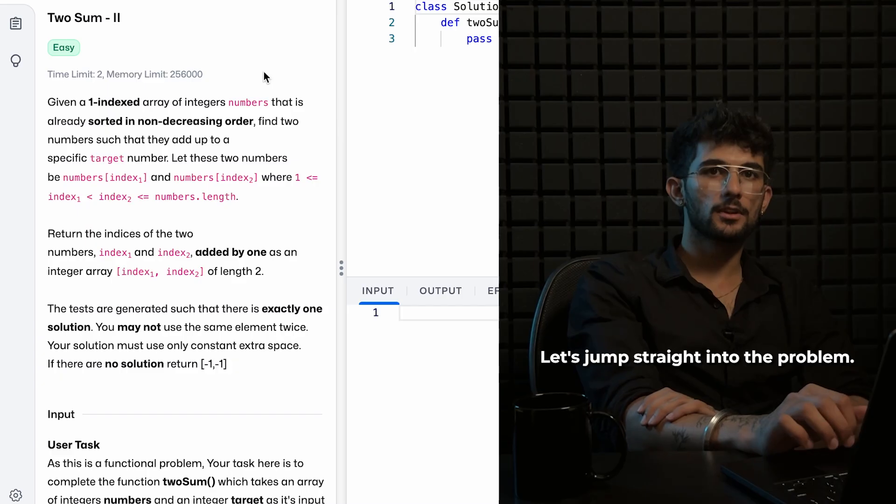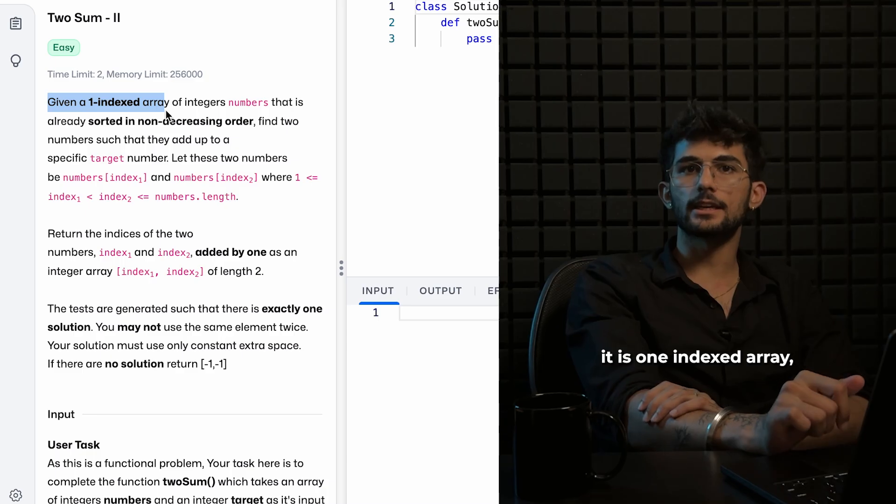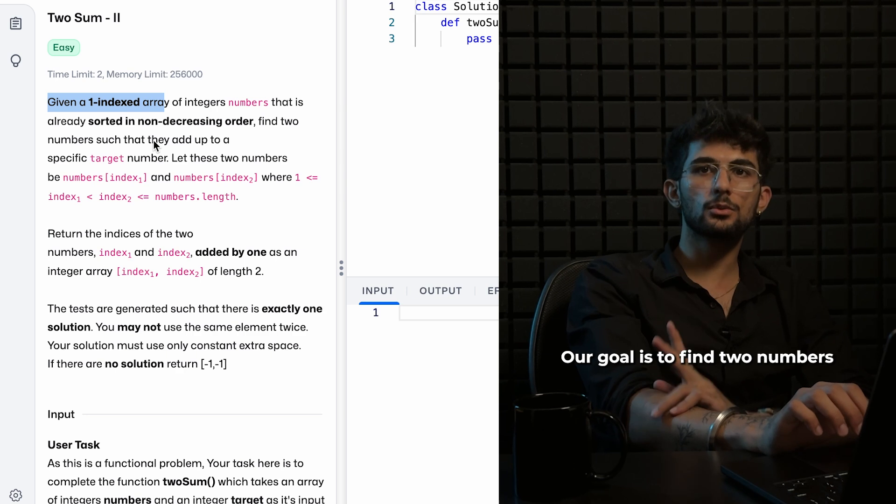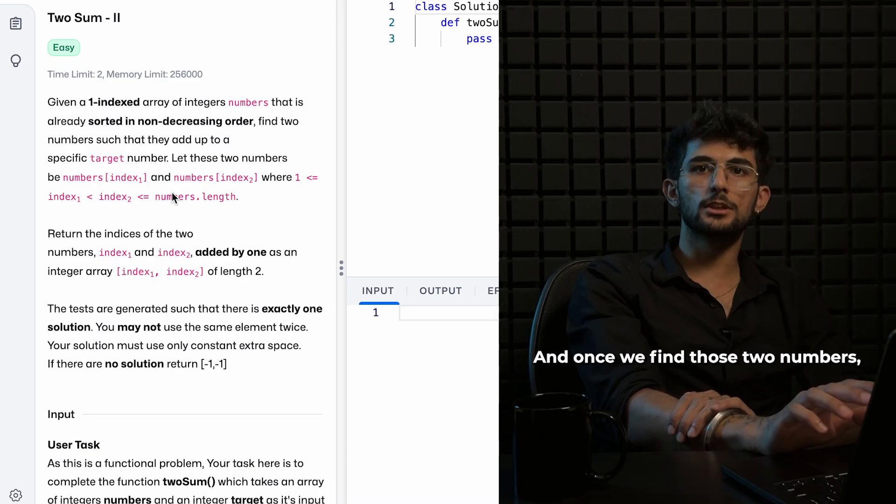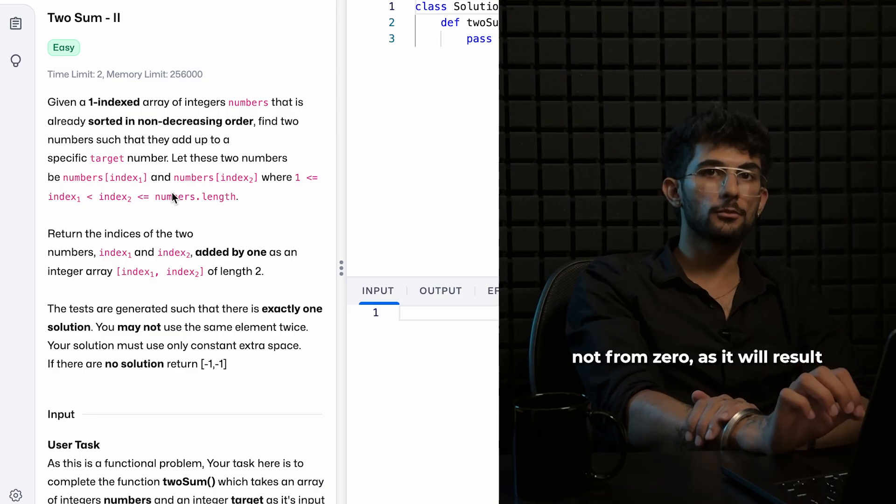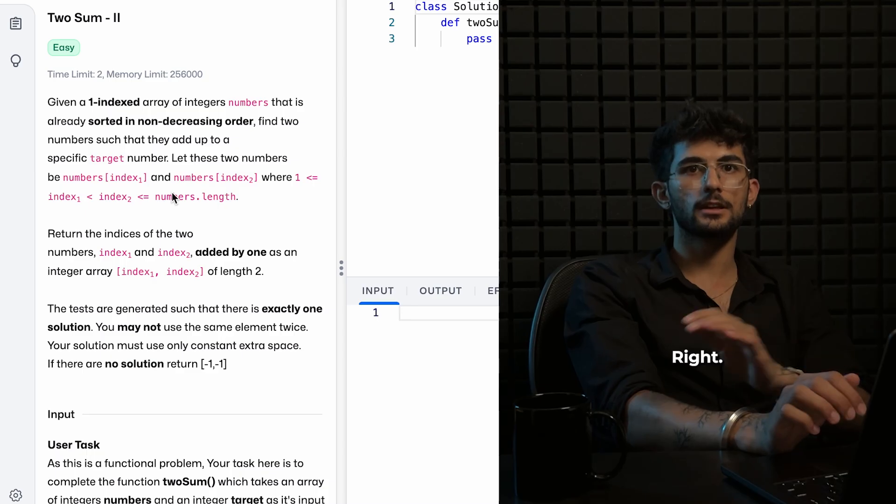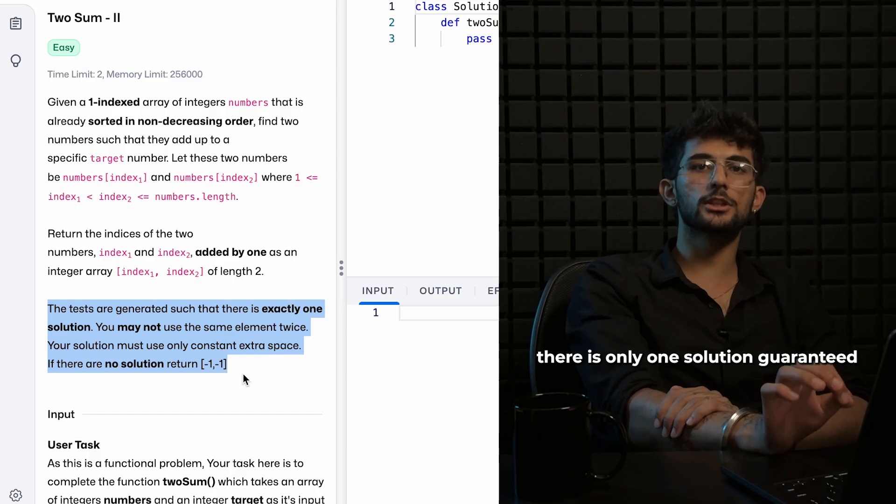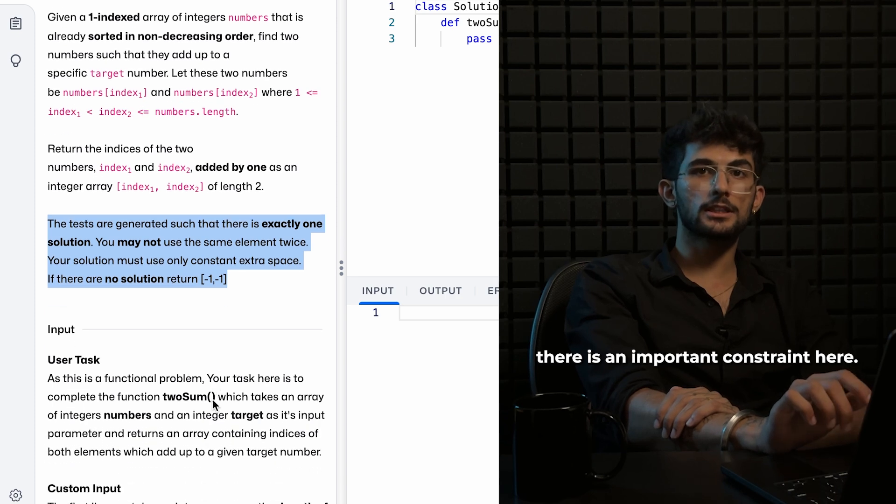Alright, let's jump straight into the problem. We are given a sorted array of integers, and if you will see here, it is one indexed array. Meaning the first element of the index is one, not zero. Our goal is to find two numbers in this array that add up to a specific target value, and once we find those two numbers, we need to return the indices remembering starting from one not from zero as it will result in array of index one, index two. And if you focus on this part it specifically says there is only one solution guaranteed and we cannot use the same element twice.